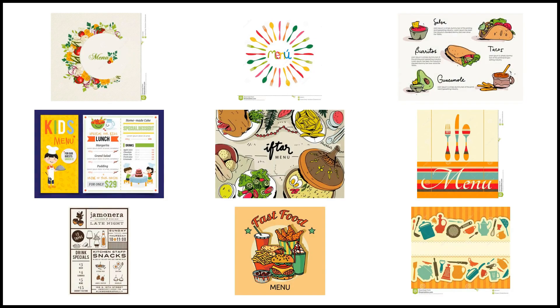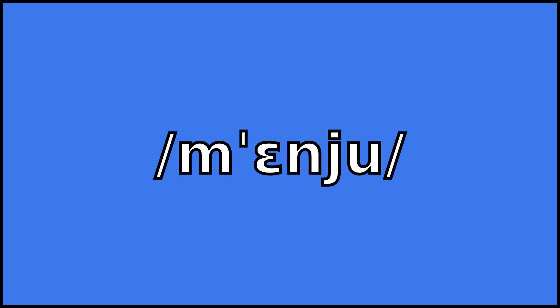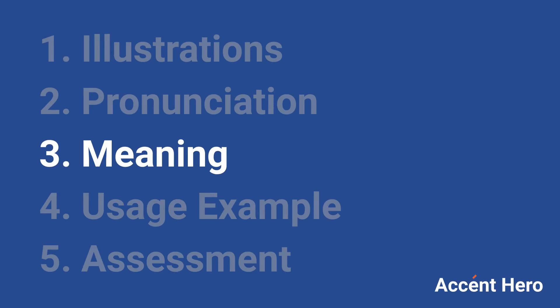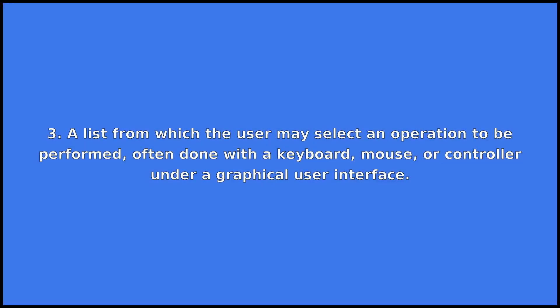Menu is a noun. As a noun, menu can mean: one, the details of the food to be served at a banquet, a bill of fare; two, a list of dishes offered in a restaurant; three, a list from which the user may select an operation to be performed.